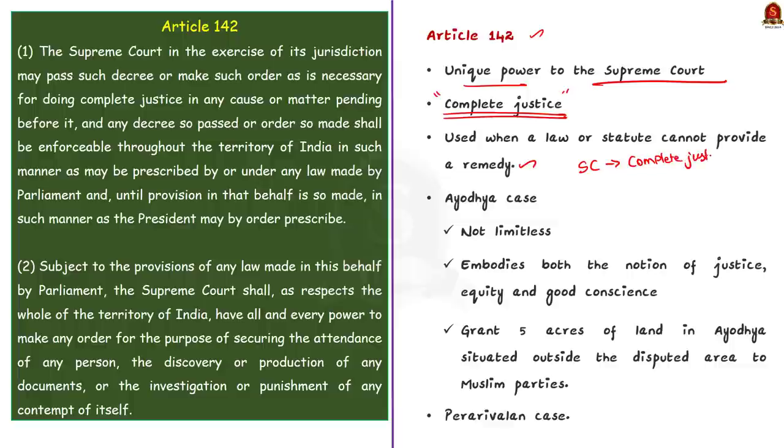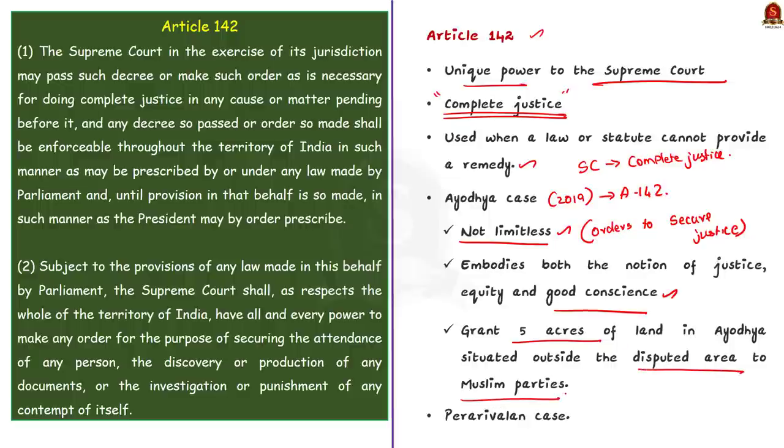Now, we will understand this with an example. In 2019 judgment in the Ayodhya case, the Supreme Court made detailed references to article 142. It said that, while the power under article 142 is not limitless, the Constitution authorizes the court to pass orders to secure complete justice. It said that article 142 embodies both the notion of justice, equity and good conscience as well as a supplementary power to the court to effect complete justice. So, the court used the extraordinary powers under this provision to grant five acres of land in Ayodhya situated outside the disputed area to Muslim parties saying that, it was invoking article 142 to ensure that a wrong committed must be remedied.